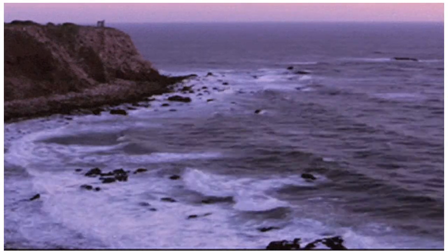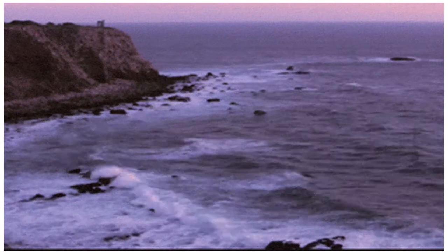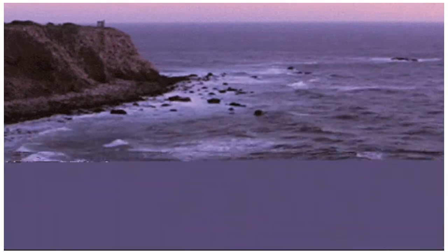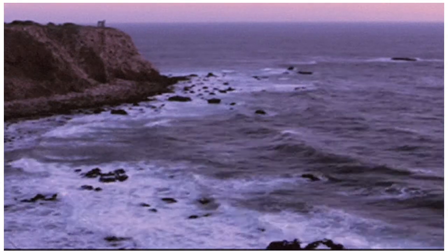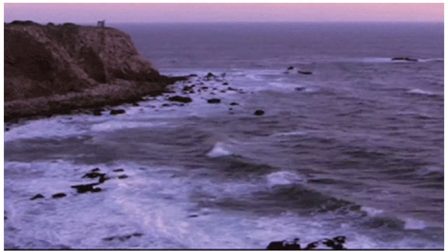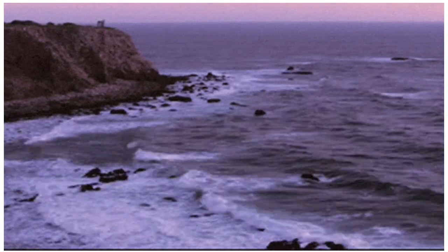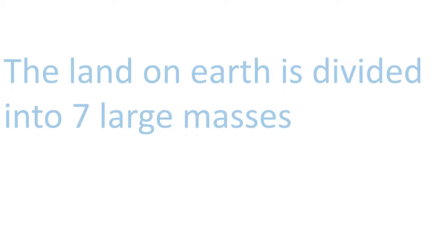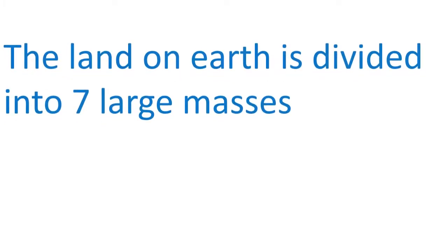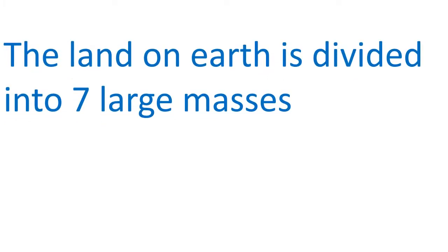Earth is made up of land, water and an atmosphere. The land on earth is divided into seven large masses.